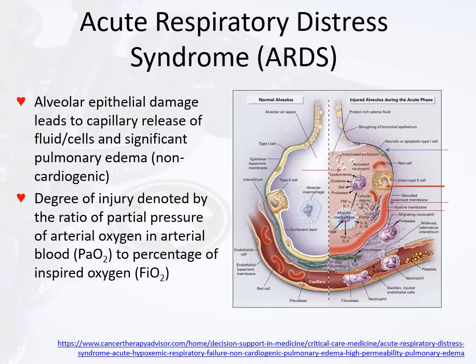Also visible is an intact type 2 pneumocyte — those are the pneumocytes that produce surfactant. Looking at the capillary: in areas with non-functional alveoli, reduced blood flow causes capillary damage. White blood cells and platelets leak out. This damaged capillary produces an inflammatory exudate moving into the interstitial area and then flowing into the alveoli.